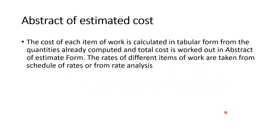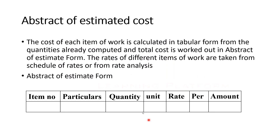The quantity from the measurement table is used in the abstract estimate. Here you enter the quantity, apply the rate, and multiply to get the amount. Different items such as excavation, CC bed, roof, column, and wall are each considered separately. All amounts are added together. At the end, three to five percent is added as contingency for unforeseen expenditure, and two percent is added to meet work charges establishment as contractor profit.